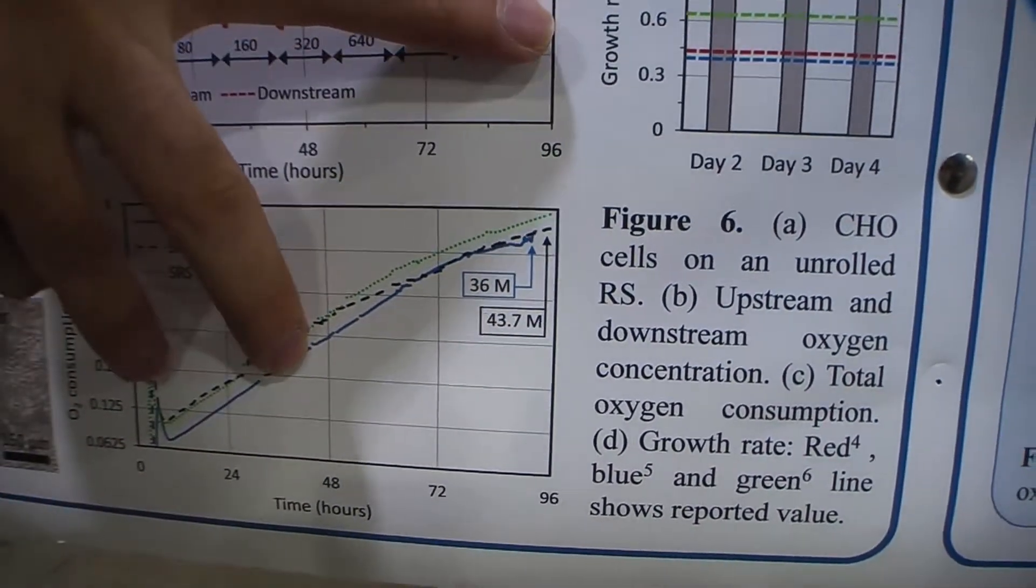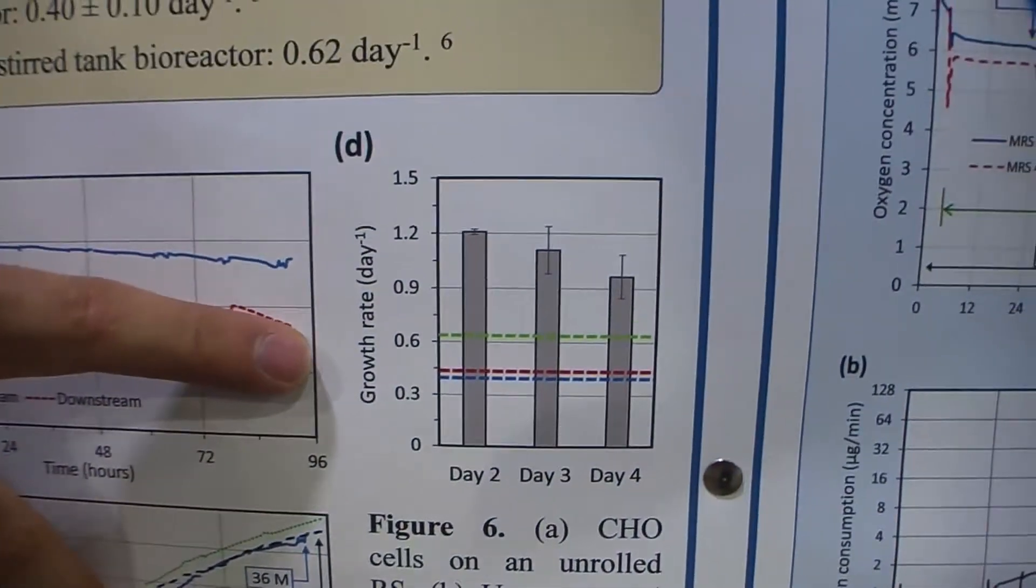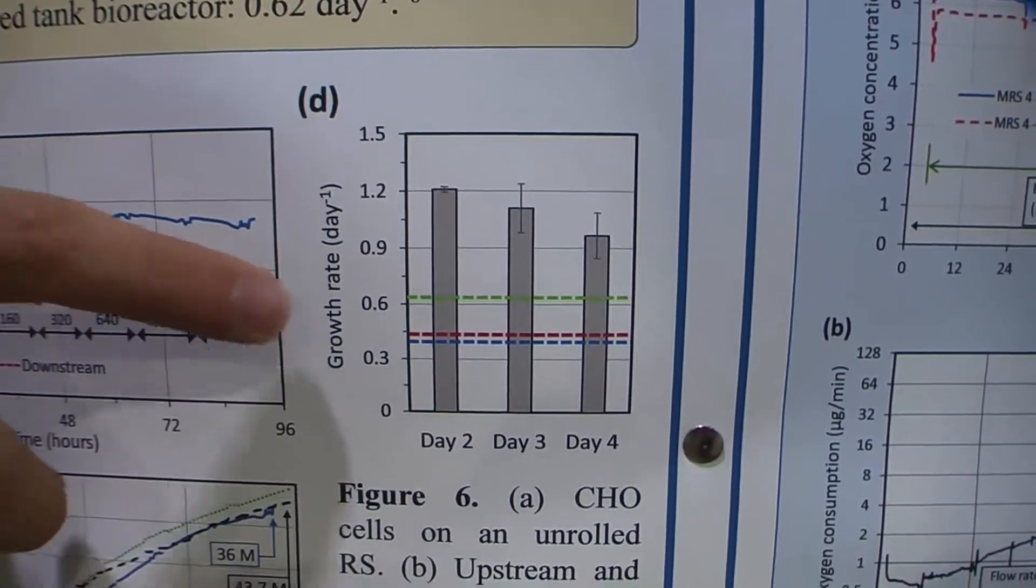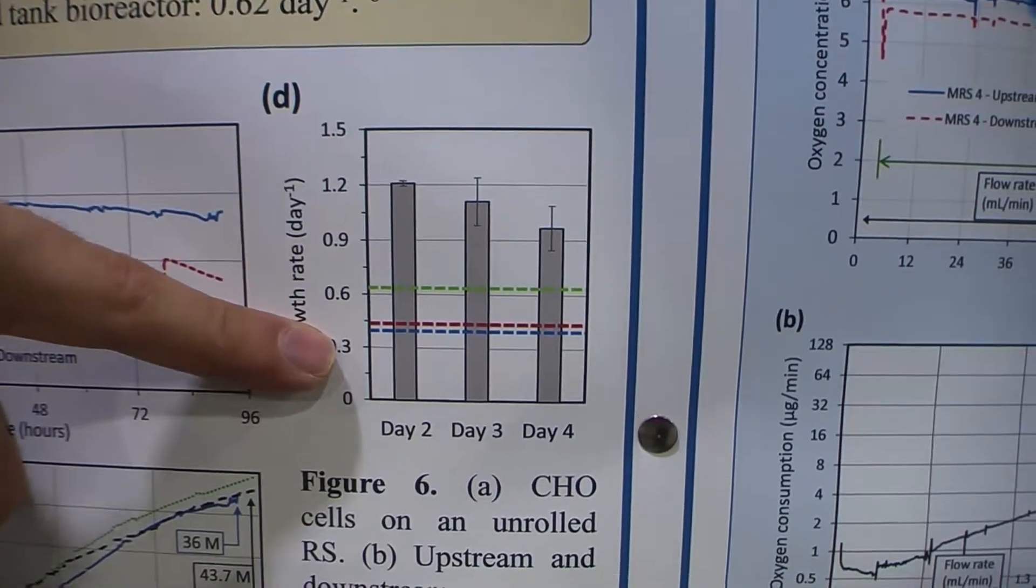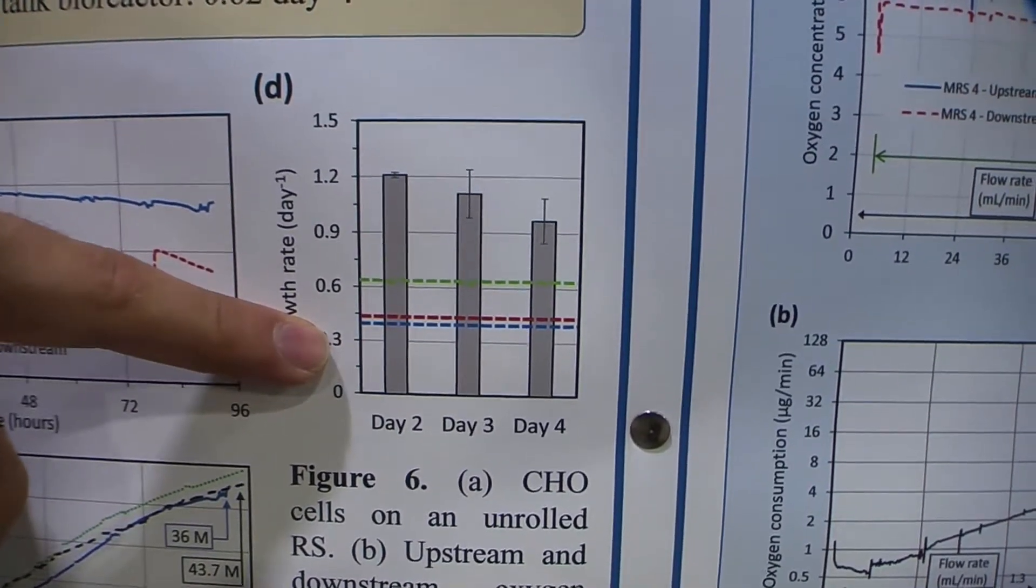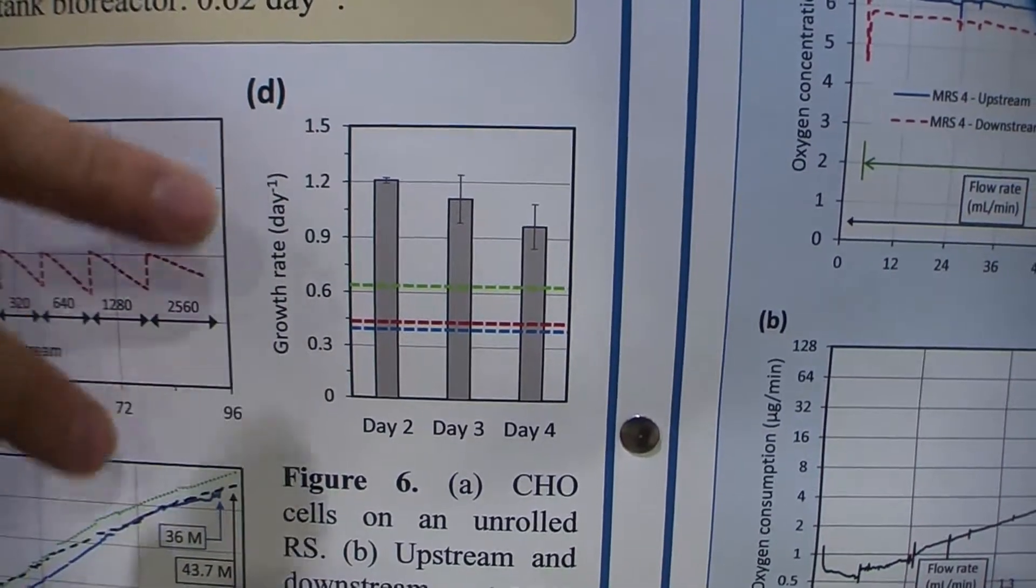When we compared their growth rate, it was very similar to what we see in 2D culture. These dashed lines show other literature for larger scale. Our growth rate was significantly higher than those.